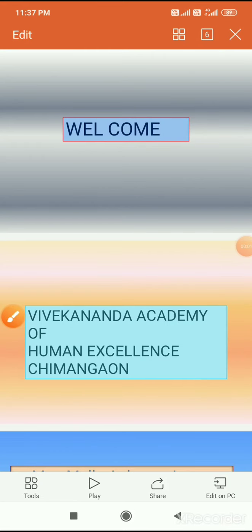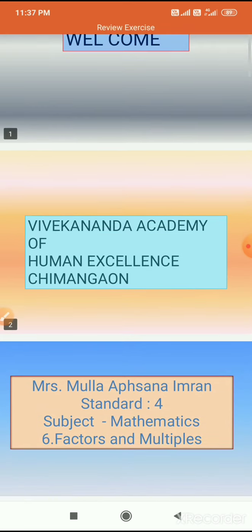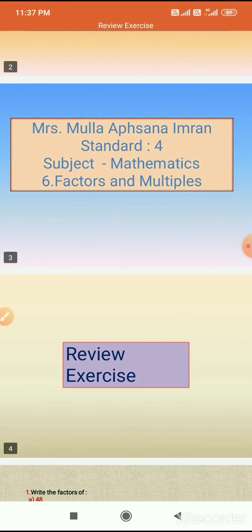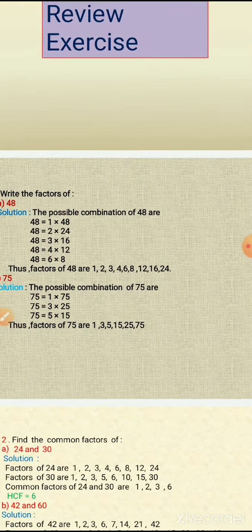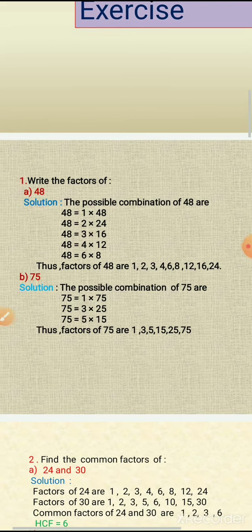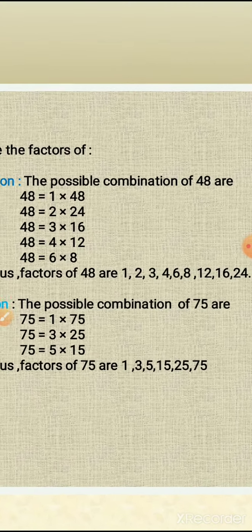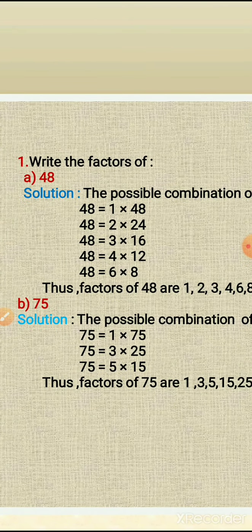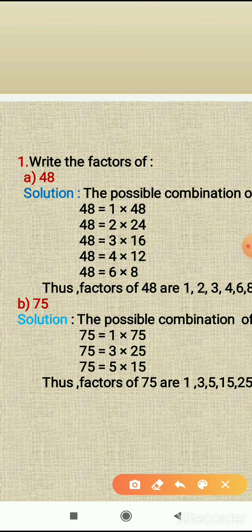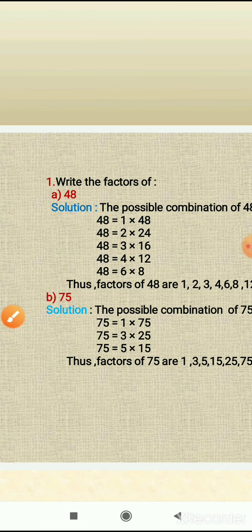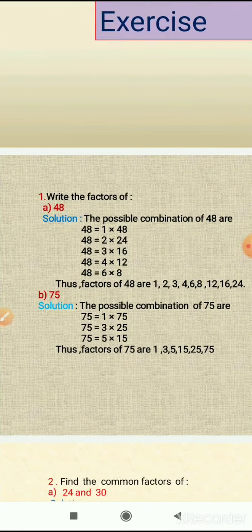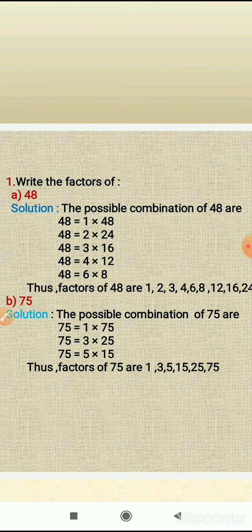Hello students, now we will solve the review exercise. The first question from the review exercise is: write the factors. The first example is 48. So, students, here we have to find the factors of 48. We have learned how to find the factors of a given number, so here by using the multiplication method we will find the factors of 48.